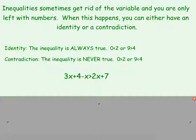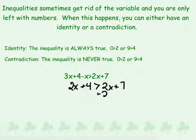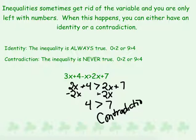Let's try the one on the board: 3x plus 4 minus x is greater than 2x plus 7. We combine 3x and negative x to get 2x plus 4 is greater than 2x plus 7. Moving variables by subtracting 2x, we get 4 is greater than 7. That is not a true statement, so we call this a contradiction. If you get a statement that is not true, call it a contradiction. If it is always true and the variables have disappeared, call it an identity.